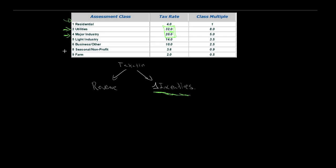You can charge a non-favorable tax rate on certain types of use to encourage development along the lines of the official community plan or council's direction — for example, discouraging too much major industry or holding onto undeveloped land. Different tax rates for residential versus business and different rates for property versus improvements can all be used to shape behavior.